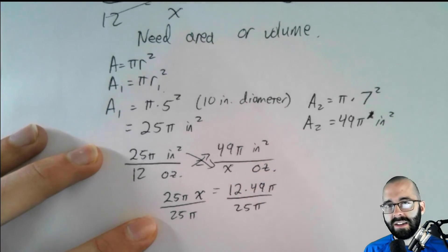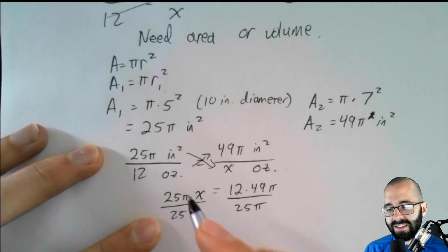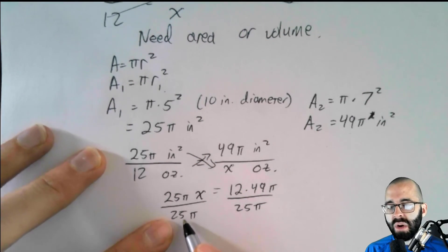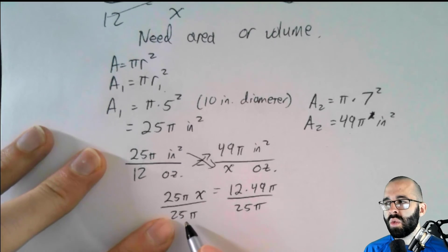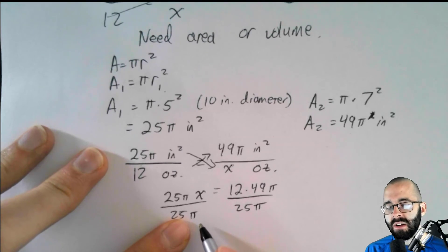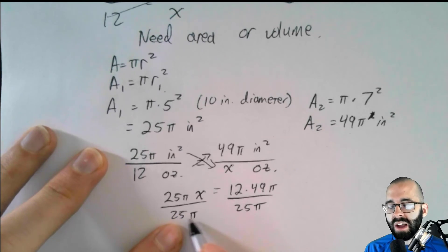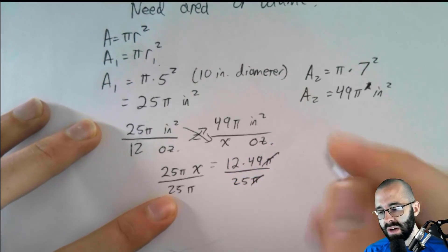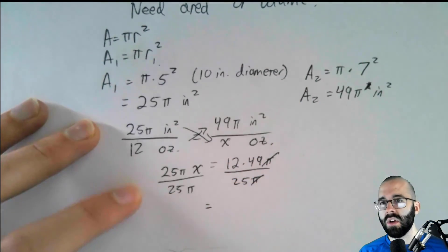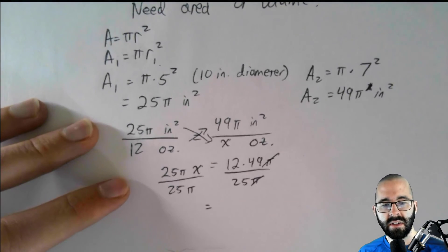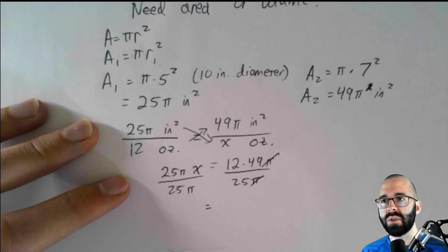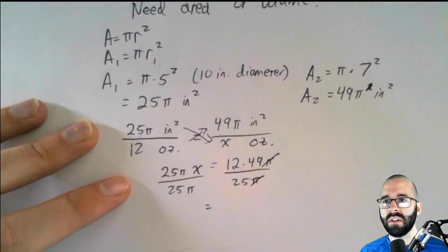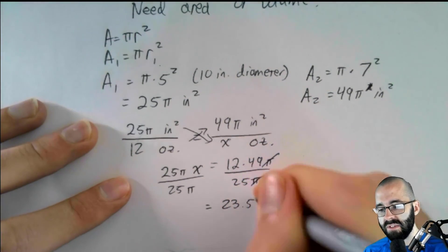When I say exact, I'm leaving it as 25 times pi. If I multiply 25 pi on my calculator, I don't care how many decimal places I put, it's an approximation. So, multiplying this out would be an approximation. This is the exact form. Okay. So, the pi's are going to cancel. We get 12 times 49 over 25, which is something. 12 times 49 divided by 25 is 23.52 ounces.